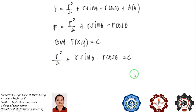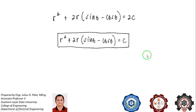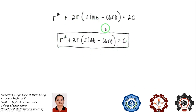To remove the fraction, multiply both sides by 2, giving r² + 2r(sinθ - cosθ) = 2c. Since 2c is just a constant c, our final answer is r² + 2r(sinθ - cosθ) = c. This is the general solution of the exact differential equation. We will have a third and final example in the next video. Thank you and good day.